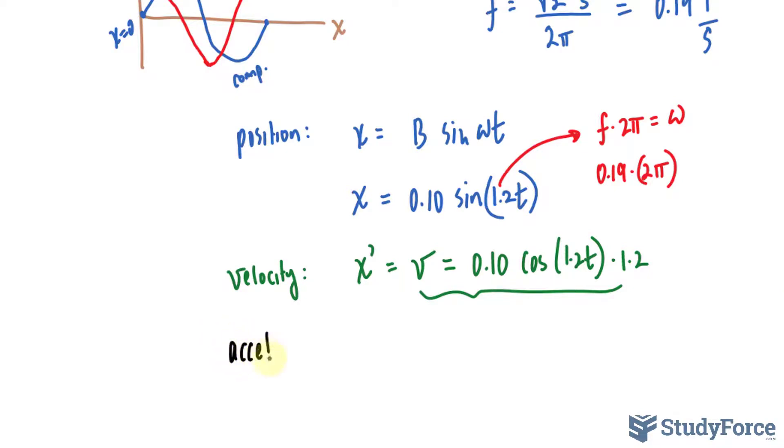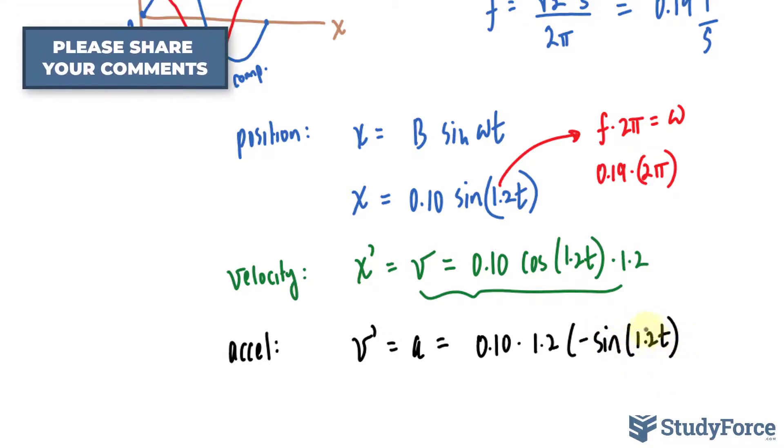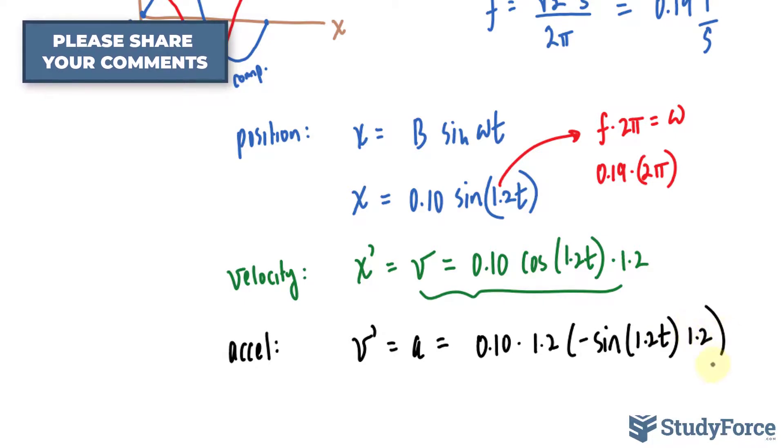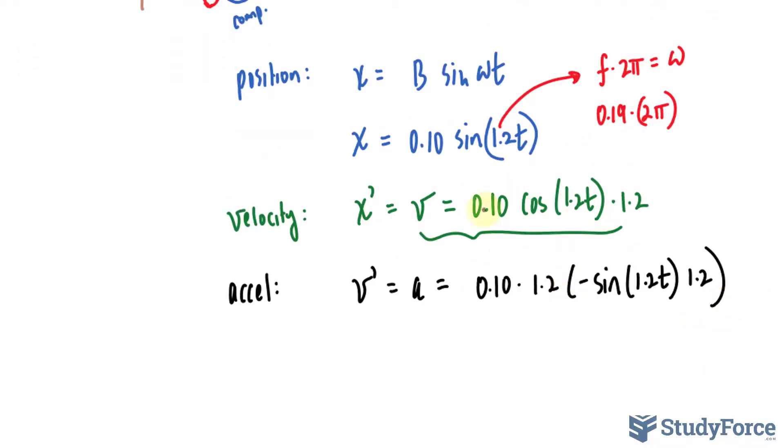The acceleration function is found by taking the derivative of v. I'll represent the derivative of v with v prime equals the acceleration, and that's equal to 0.10 times 1.2. The derivative of cosine is negative sine. So I'll write down negative sine 1.2 t, and I'll take the derivative of the inside being 1.2 again.